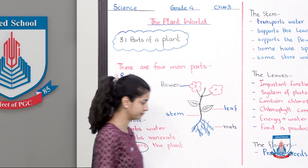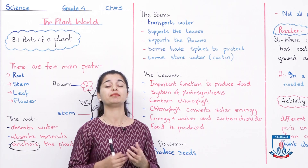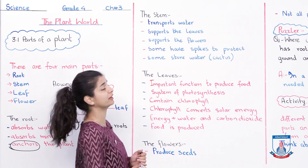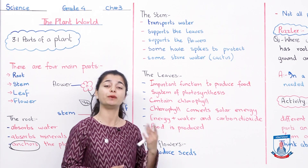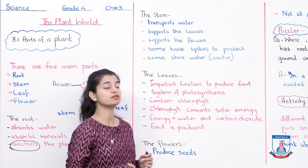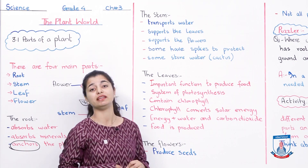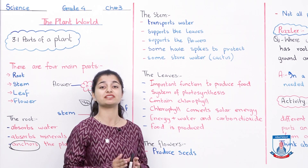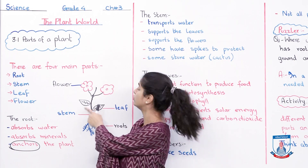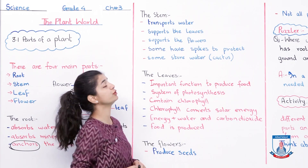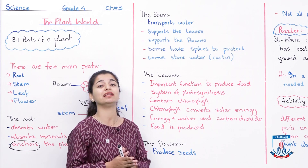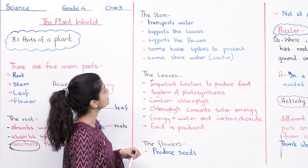Now let's talk about the stem. Before leaves, we will discuss what the stem does — the different functions stems perform for plants. The stem transports water and minerals that the roots absorbed up to the rest of the plant. The stem also supports the leaves and flowers — they are held in their place because of the stem.